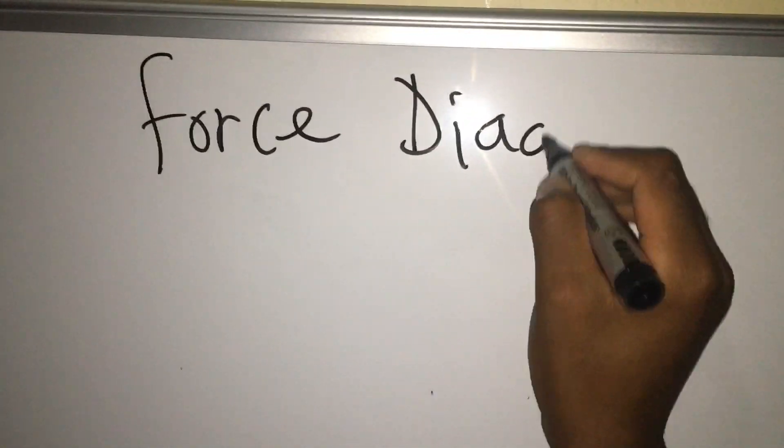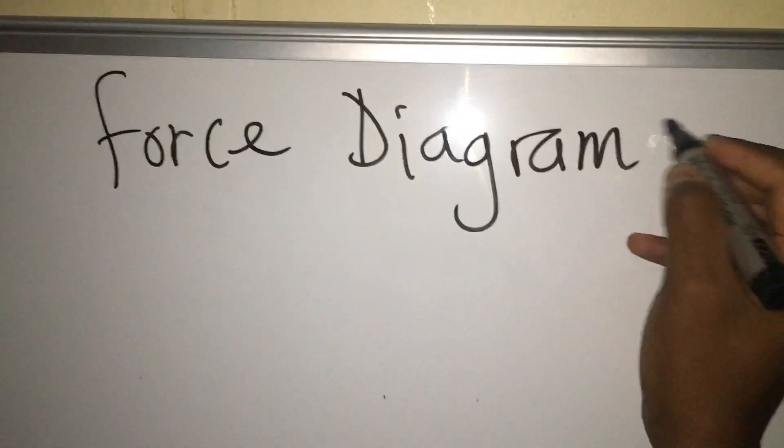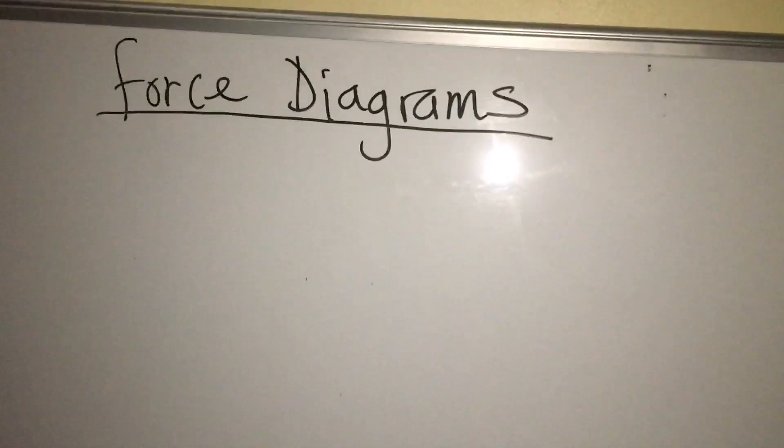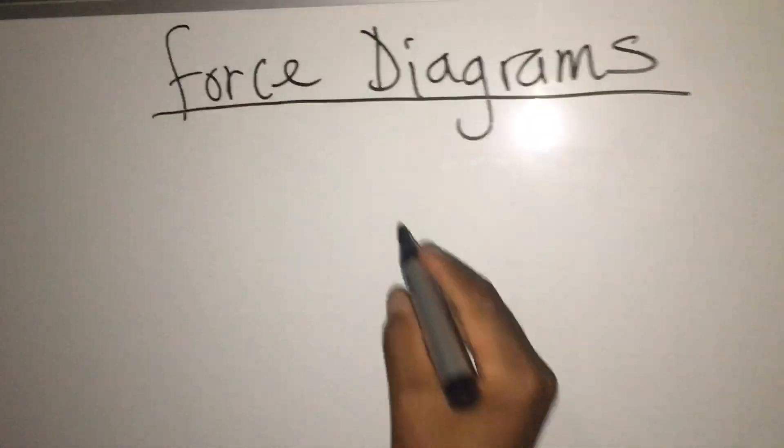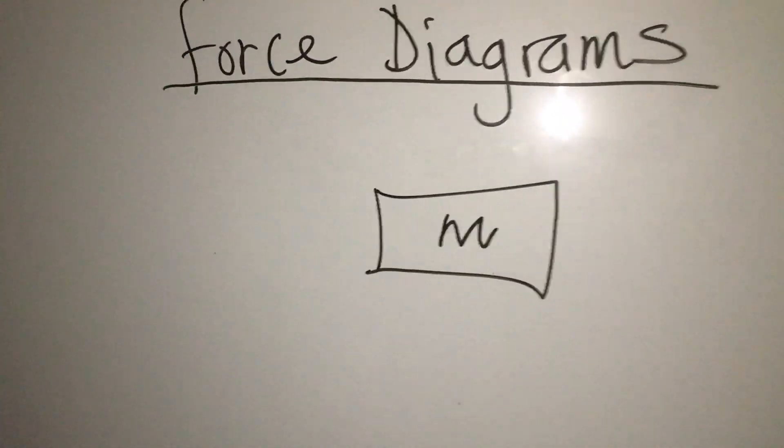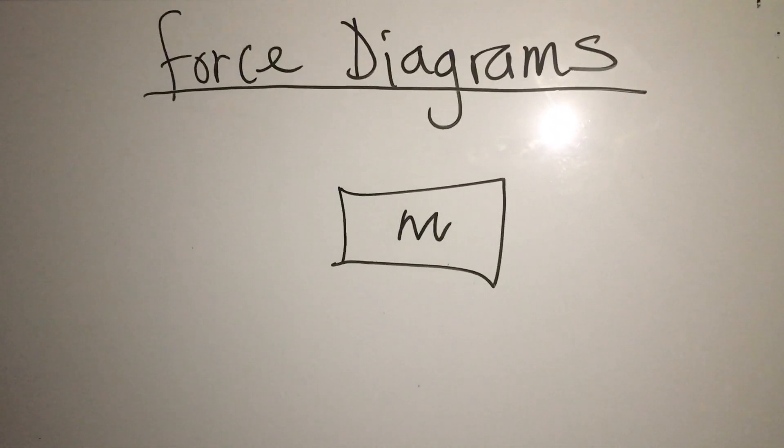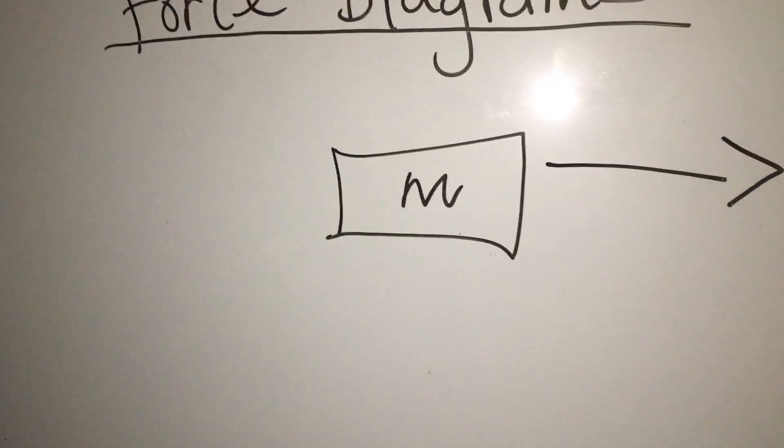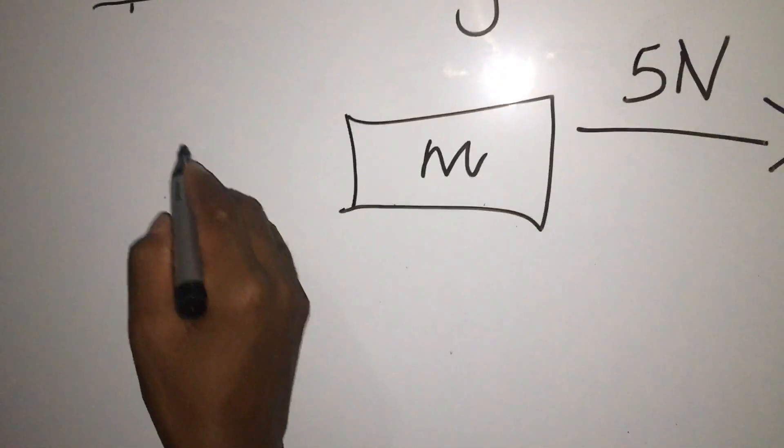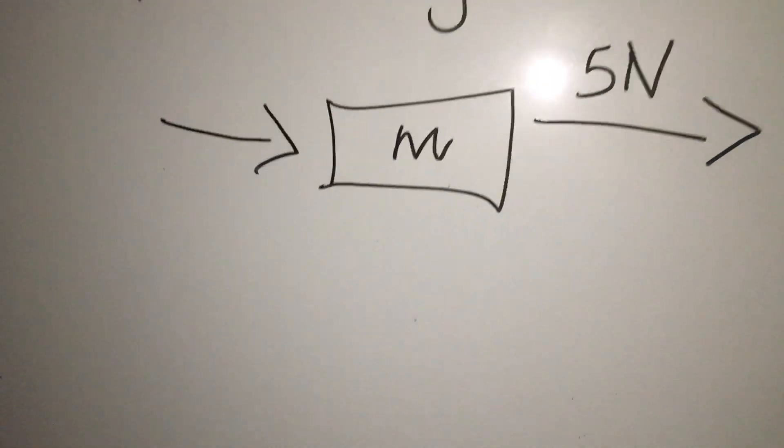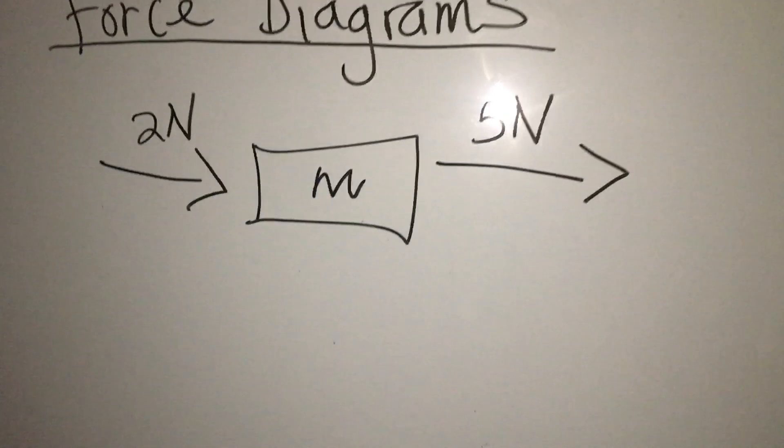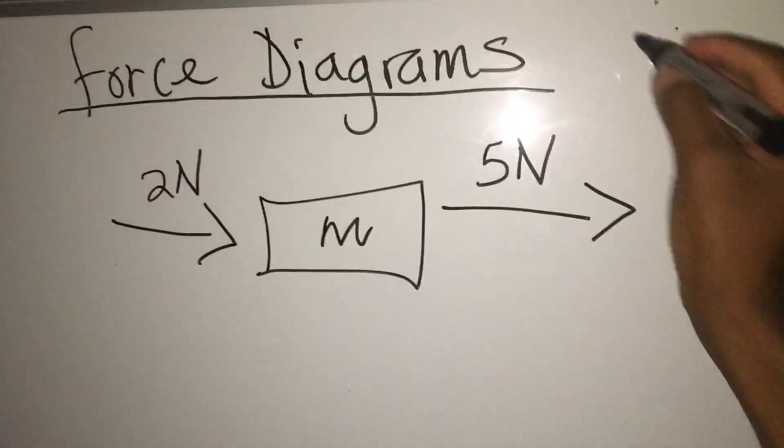We have force diagrams - this is what we want to focus on. You have your mass here, mass obviously in kg. Then you have a force pulling here, which is five newtons, and here you have a force pushing your mass, which is two newtons. Calculate the resultant force.